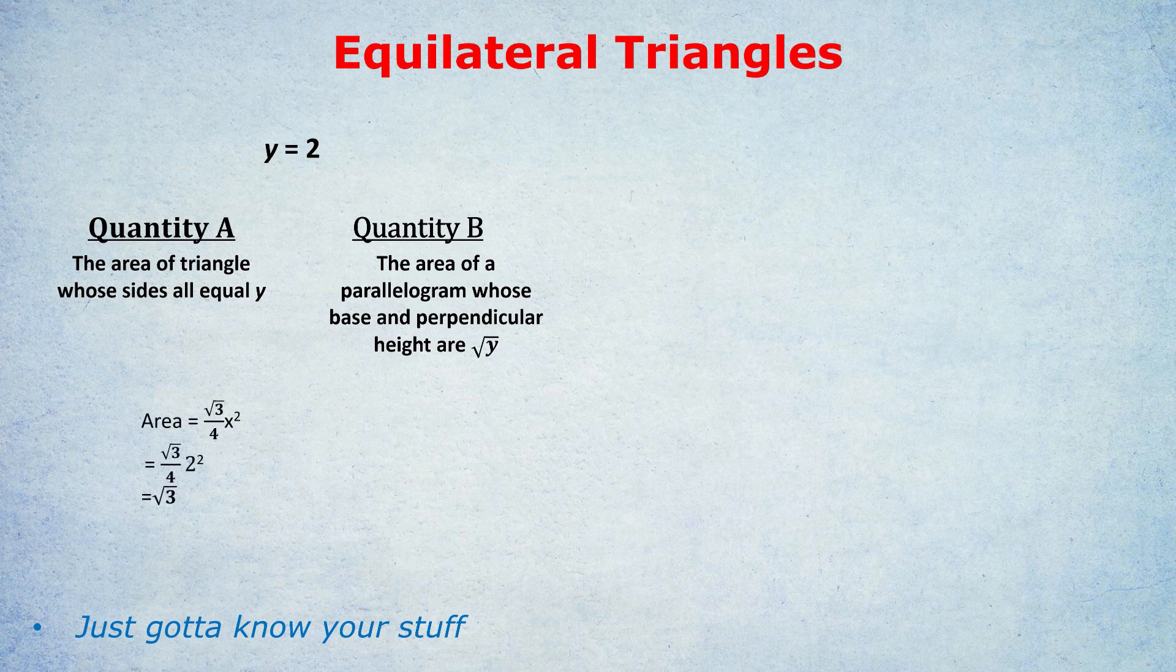And so we place that into the formula. Area equals root 3 over 4, x². Our x is 2. 2² is 4. Notice the 4s cancel out. Divide by 4 and times by 4 cancels out. You just leave root 3.